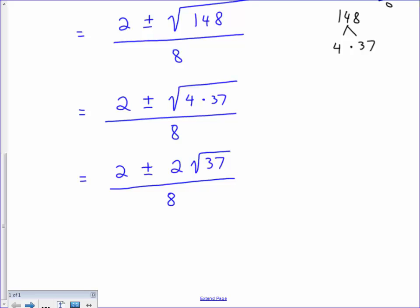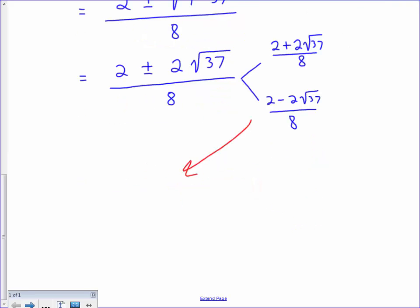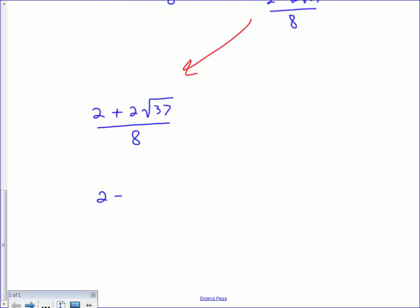From here, I now want to split my answer. I will split it as 2 plus 2 roots of 37 over 8, and then 2 minus 2 roots of 37 over 8. I'm going to need a little bit more room, so I'm going to scooch these answers down below. I have 2 plus 2 roots of 37 over 8, and I also have 2 minus 2 roots of 37 over 8.